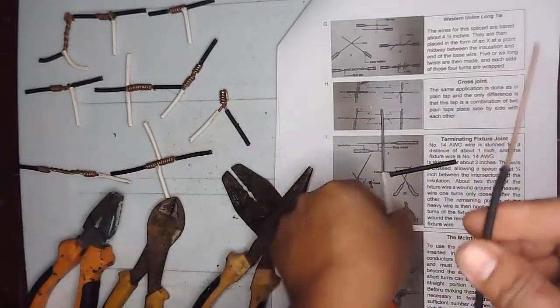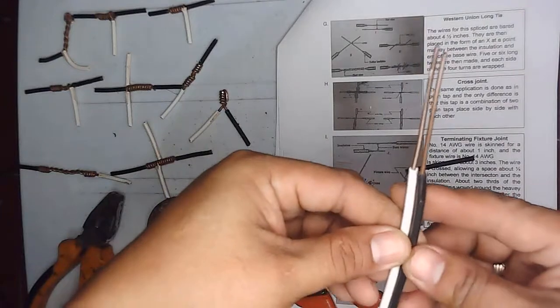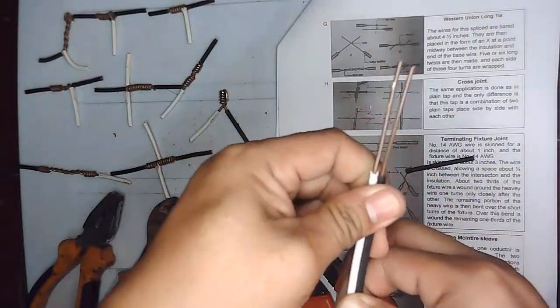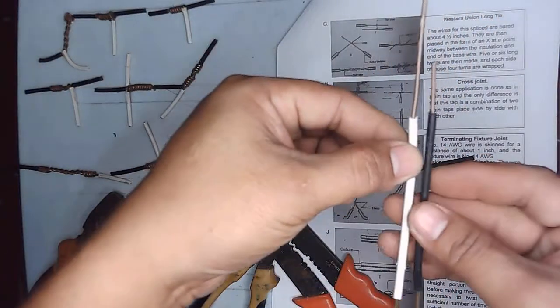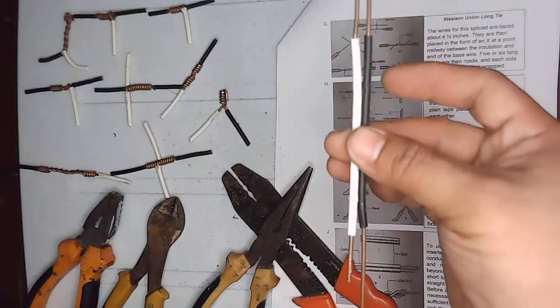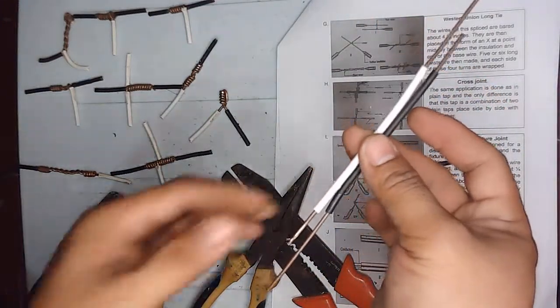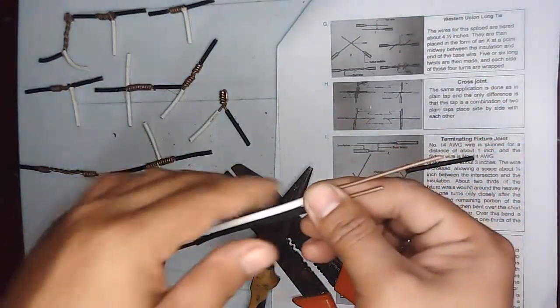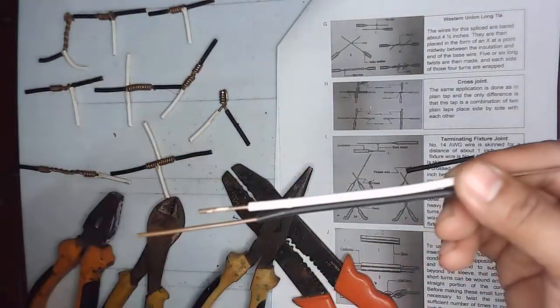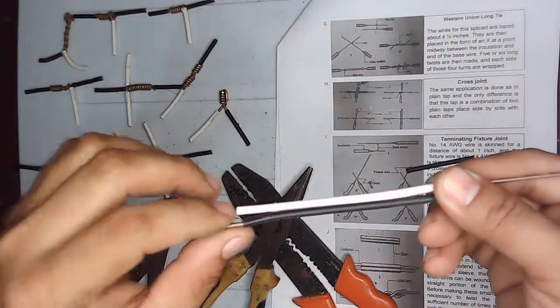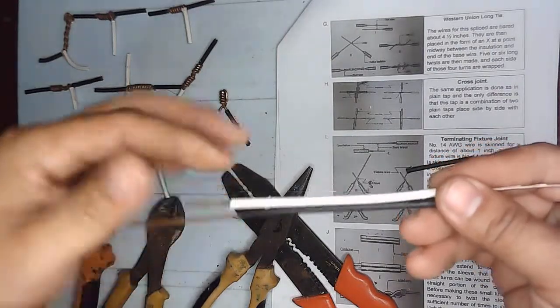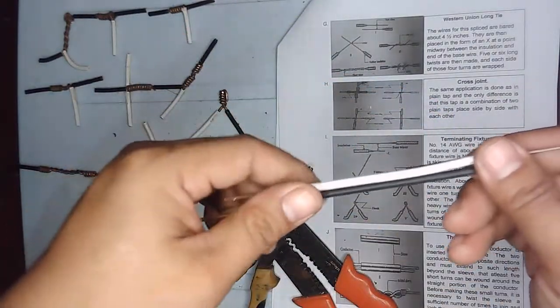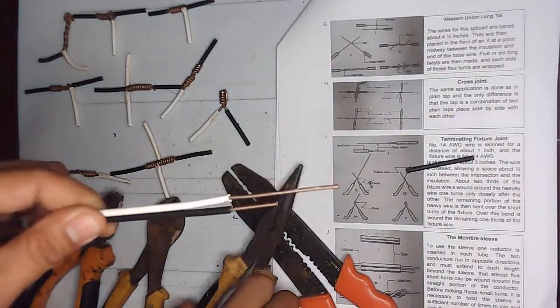Okay, so as you can see they are on the same length: two inches, one inch. Then invert just like that. Okay, so next thing to do is to twist the two bare wires. So in the center there is insulation.